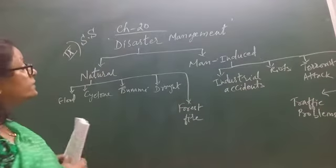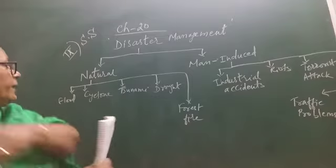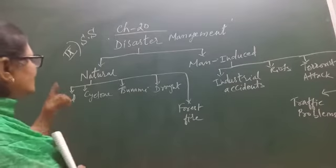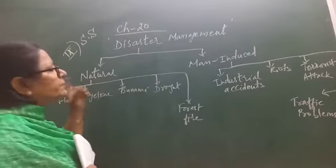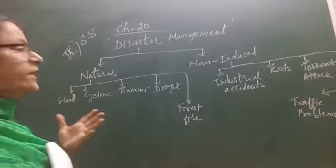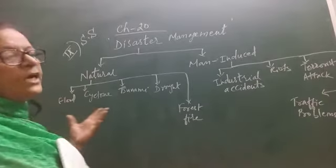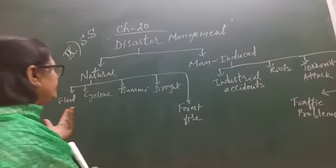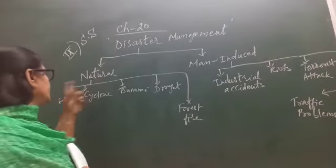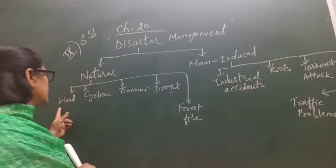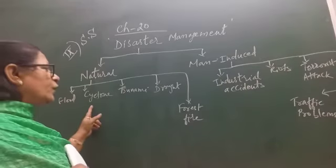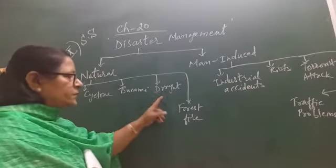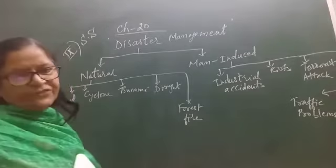Disaster means it may be natural or man-induced. Natural disaster means it occurs naturally — we can't stop it or predict it. Natural disasters include clouds, cyclone, tsunami, drought, and forest fire.